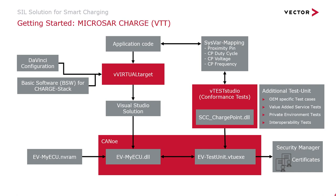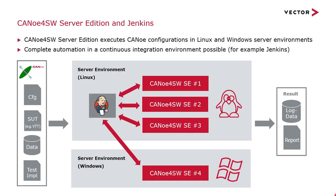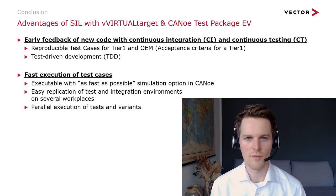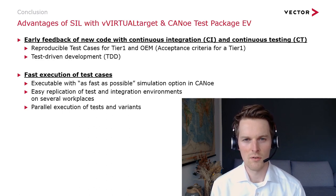You can execute this with CANoe or in future also with CANoe for software server edition on a Jenkins server. This allows you to have multiple instances of this software-in-the-loop setup running in parallel. So that brings us to the first big advantage: you get early feedback on new code with continuous integration and continuous testing, and you can execute your test cases as fast as possible.